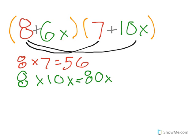Next is the I, which stands for inside. So in this case, you'd multiply 6x times 7, which equals 42x.